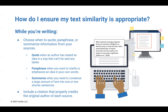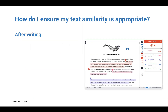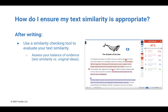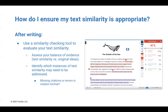This means including in-text citations as well as bibliographic material at the end of your writing. After you've finished your paper, use a similarity checking tool to evaluate your text similarity. Compare the amount of text similarity to the amount of original ideas you present in your writing. Consider the task expectations to determine how appropriate this balance is and whether or not it needs to be addressed. Then, check that all in-text citations and bibliographic references are present and properly formatted.